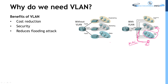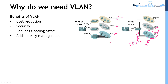Any broadcast generated from one VLAN will never pass to another VLAN. The next benefit is easy management. When you have a big network, you can divide the entire network into smaller sub-networks, give them a name or an ID to identify which device belongs to which department. For example, you can create a separate VLAN for a management department.